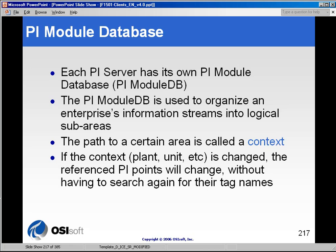PI Servers, as they are today before the module database was configured or introduced, are essentially a collection of unrelated points. For example, if you have a device and you're measuring 20 different points or aspects of that device, and you want to see what tags you're monitoring on that specific device, without the module database you have to maintain an independent list of those tags and find a way to look them up on your server.